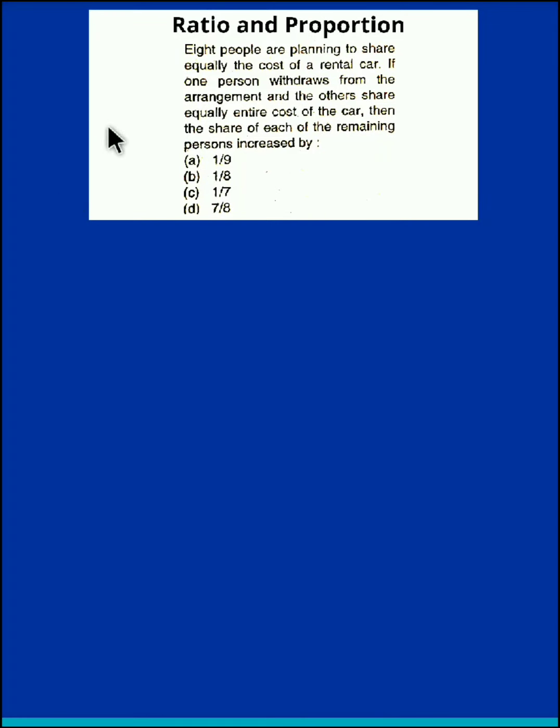Hello and welcome back. We now discuss an example from the topic of ratio and proportion. The question is: Eight people are planning to share equally the cost of a rental car. If one person withdraws from the arrangement and the others share equally the entire cost of the car, then the share of each of the remaining persons increased by how much?